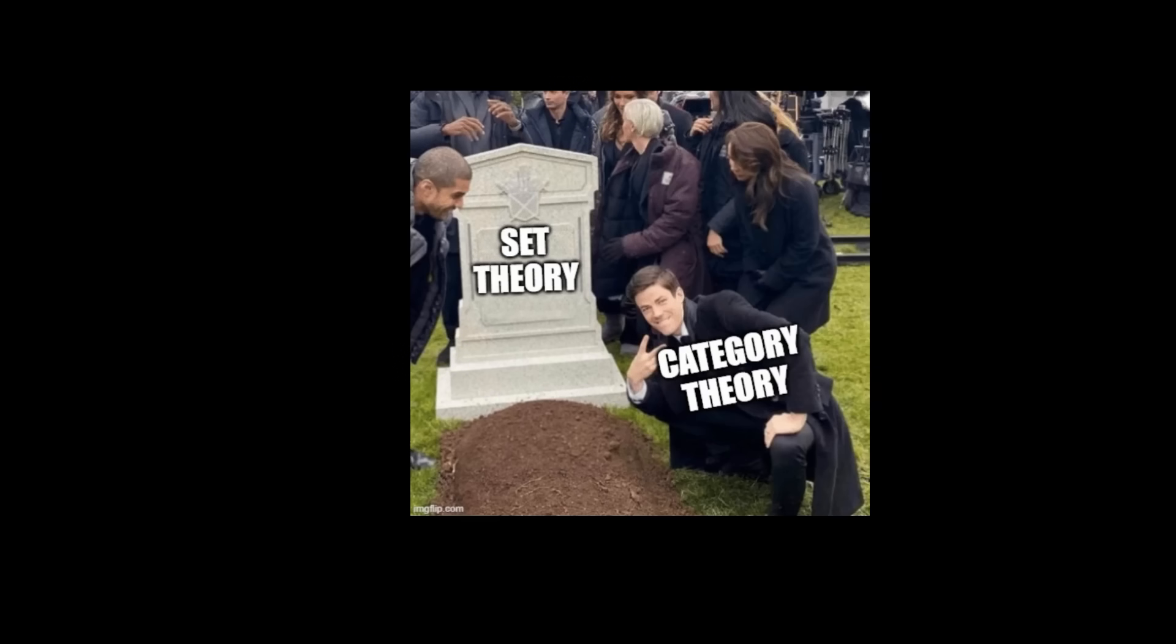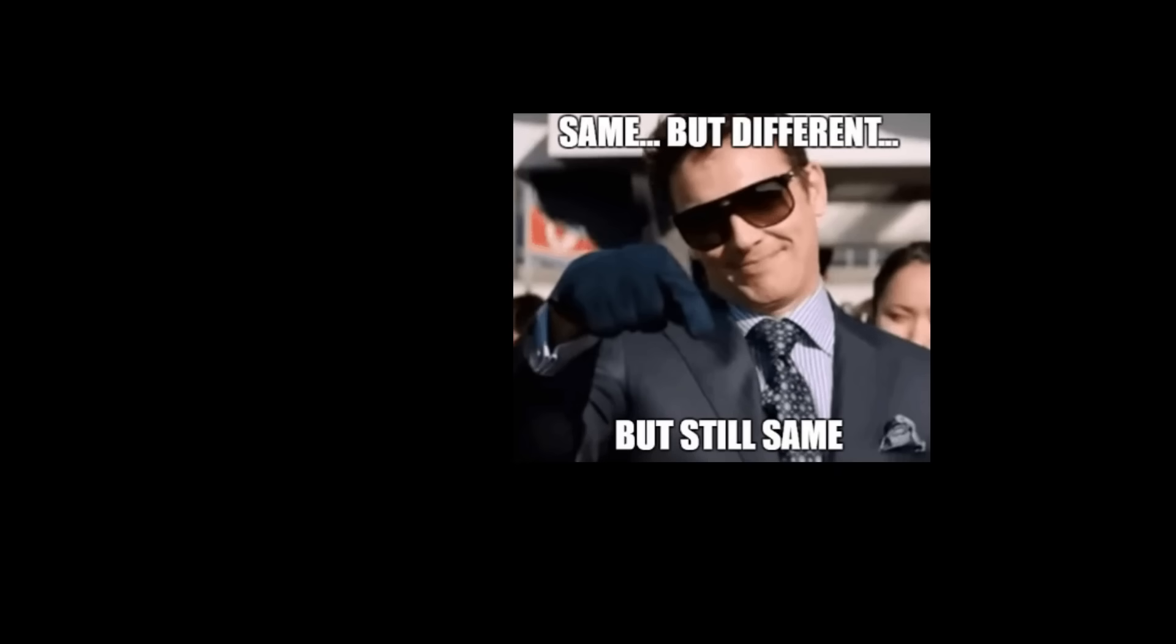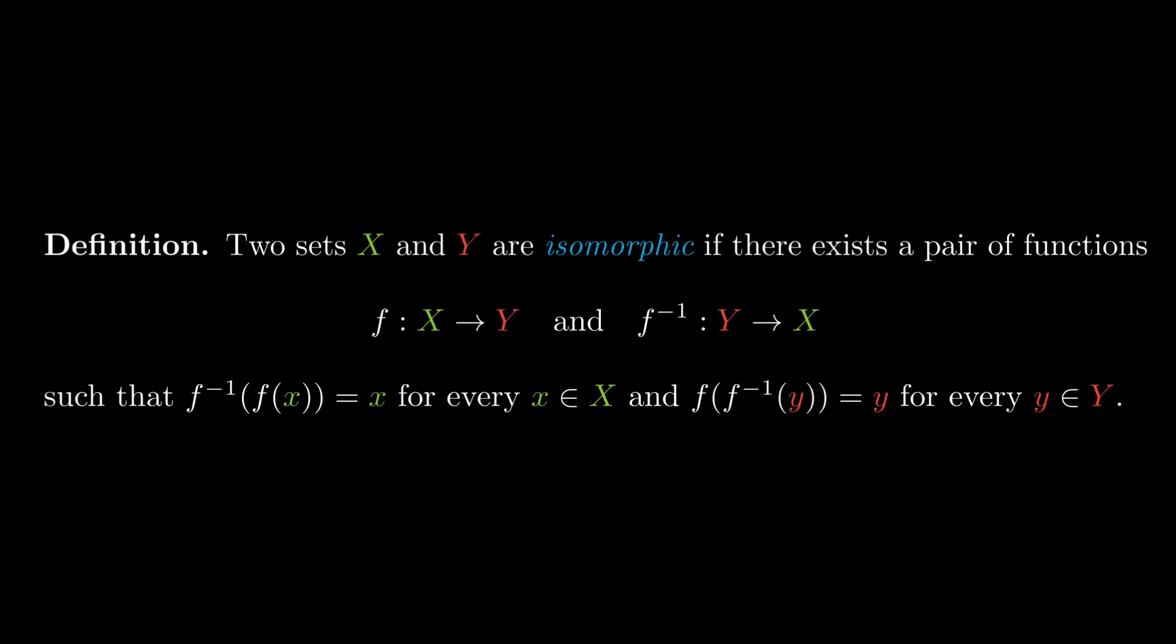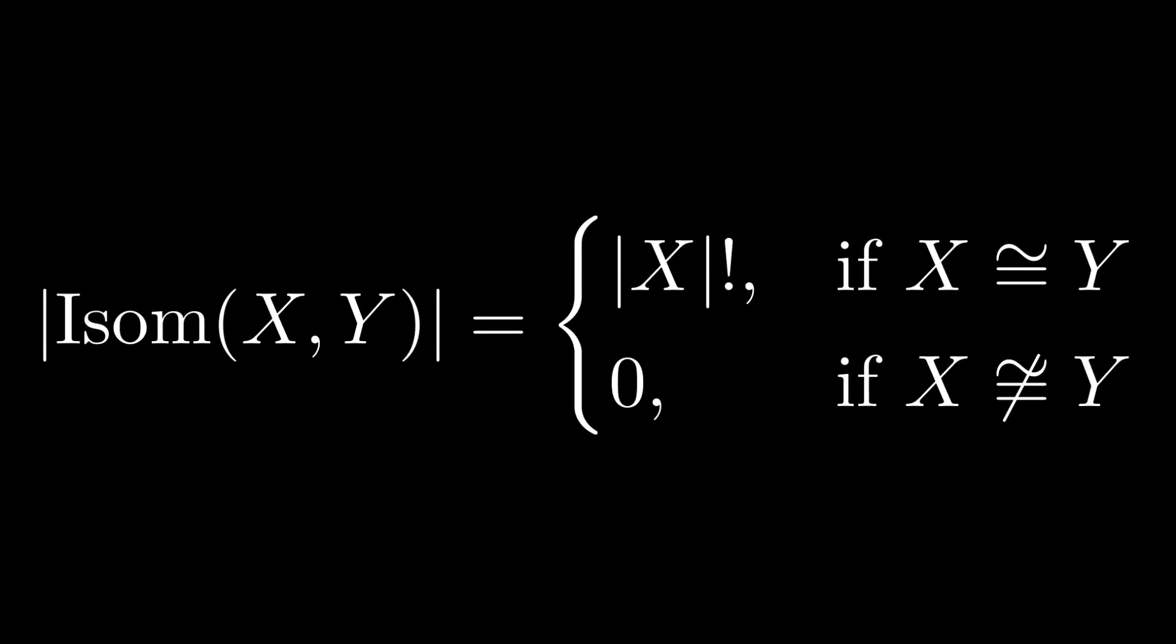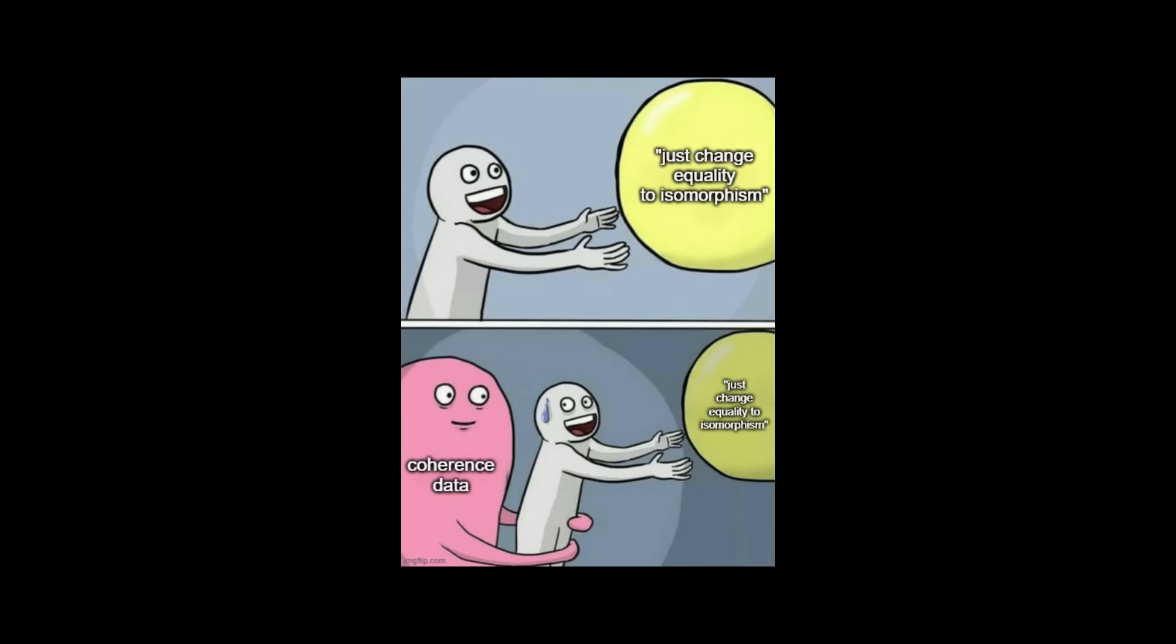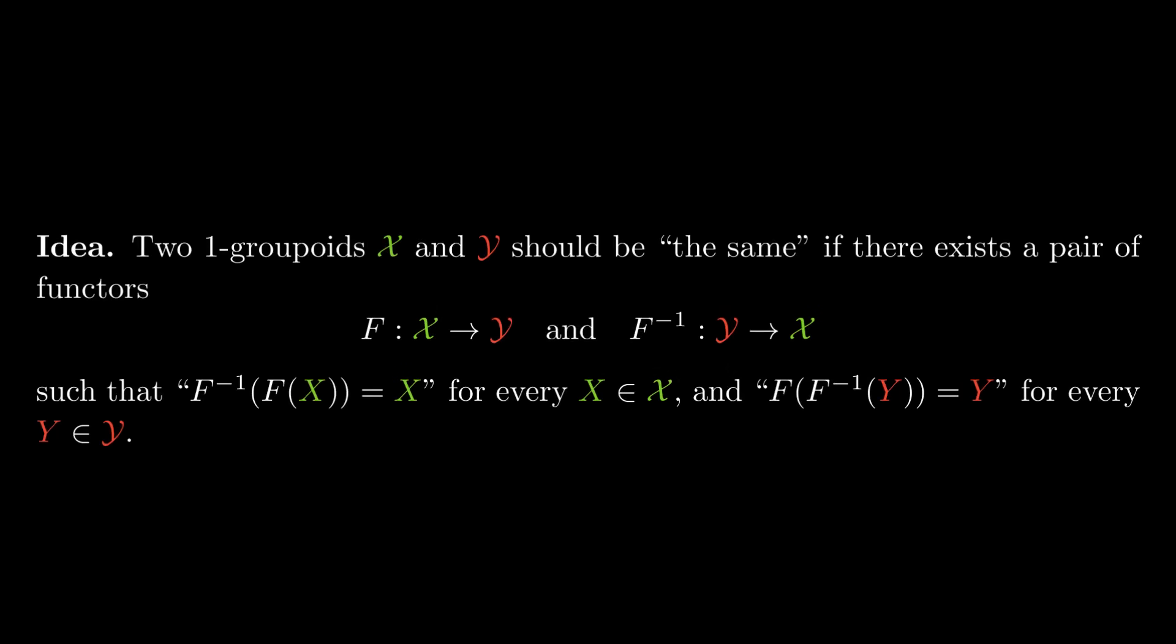Since set theory is already a dead field, I won't bother spelling this out too much, but since elements of a set don't have any inherent characteristics, two sets are the same if they're the same size. This can be exhibited by two functions f and f-inverse pointing in opposite directions such that applying one and then the other is the same as doing nothing. Since two sets can be equal in many ways, this shows that the collection of sets naturally forms a large one-groupoid. Make sense? Good enough. Now, let's return to talking about when one-groupoids are considered the same. Morally, we want to say the same thing. Two-groupoids should be the same if we can provide a pair of maps f and f-inverse in opposite directions that compose to doing nothing.